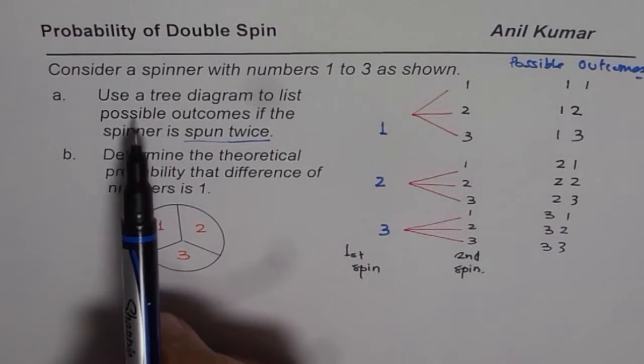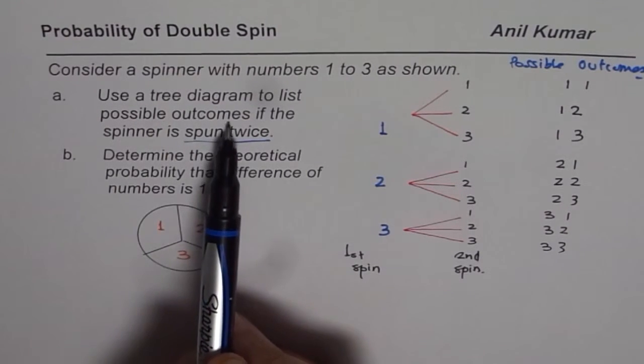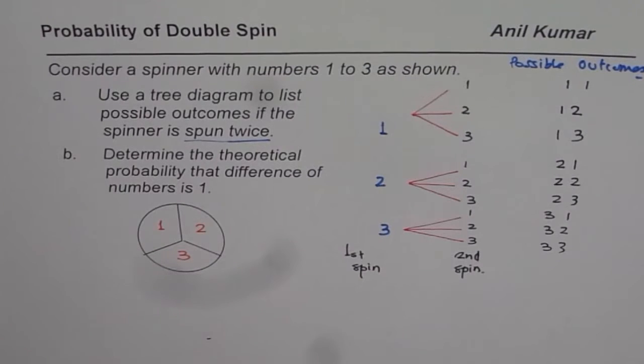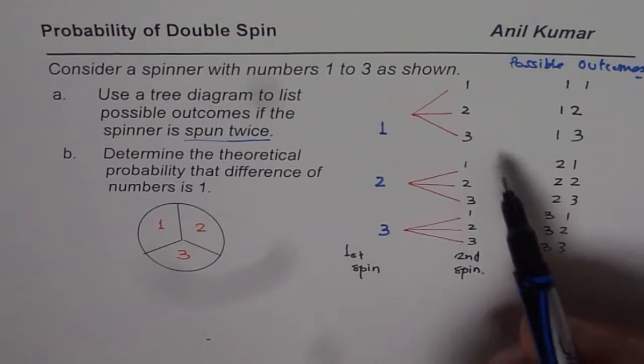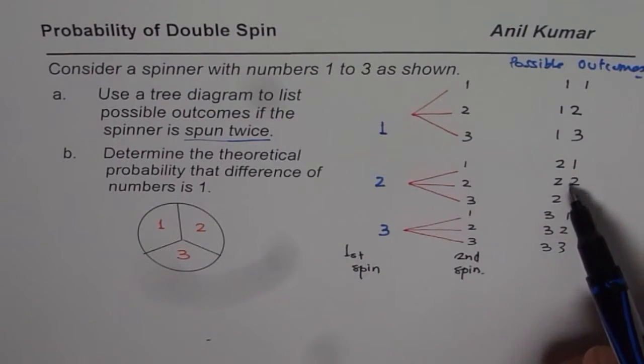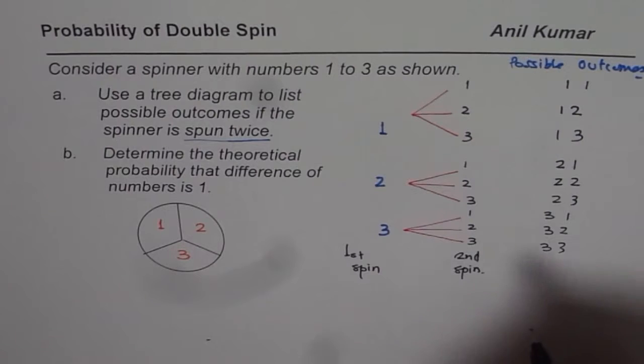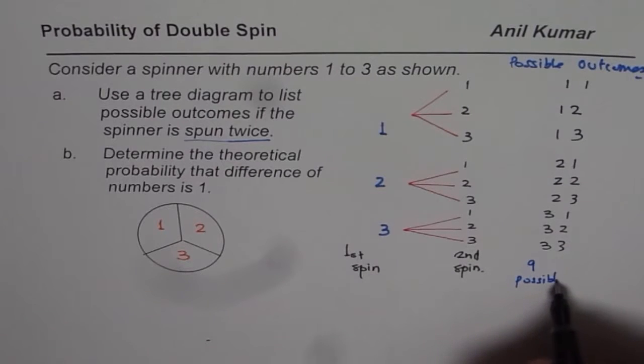So we have done part A, which is use a tree diagram to list possible outcomes if the spinner is spun twice. Can you tell me how many possible outcomes are there? 3 times 3, 9. 1, 2, 3, 4, 5, 6, 7, 8, 9. So we have 9 possible outcomes.